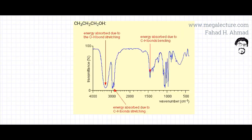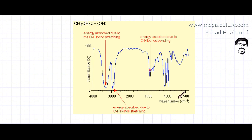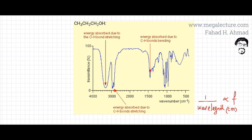Here I have an infrared spectrum of a propan-1-ol molecule. First, I'm going to describe what the axes are. The x-axis is described as wave number. Wave number is 1 over wavelength — specifically 1 over the wavelength in centimeters — so it's basically proportional to the frequency of the wave. You can think of these wave numbers as frequencies.